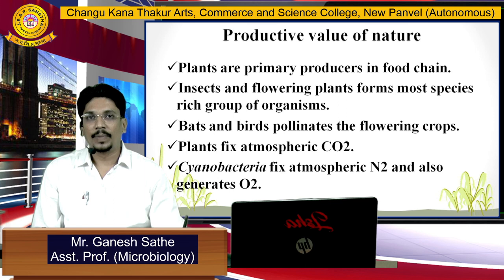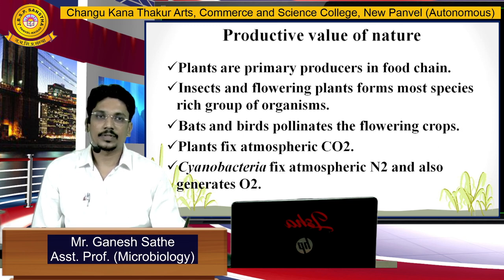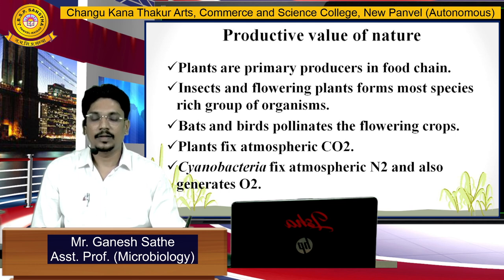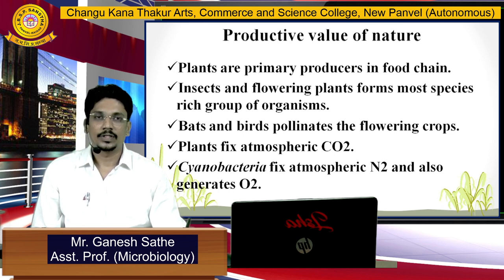Nature has plants and animals. Plants are called primary producers. Along with plants, insects and flowering plants also form more species-rich groups of organisms because they are involved in pollination. Along with insects, bats and birds also pollinate the flowering crops. Plants have one important enzyme called Rubisco, and with the help of Rubisco, they fix atmospheric carbon dioxide gas into a six carbon-containing sugar.